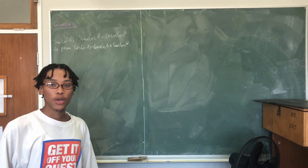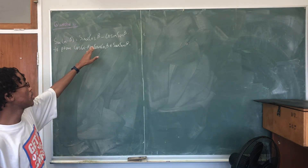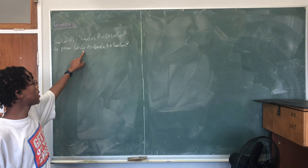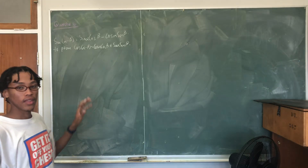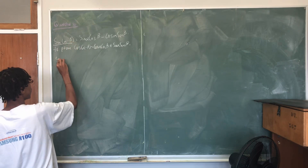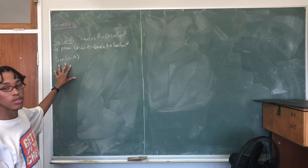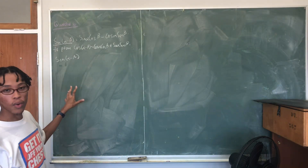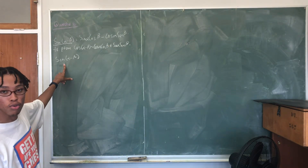For this question we have been told that sin(alpha minus beta) is equal to sin alpha cos beta minus cos alpha sin beta. We need to use that to prove that cos(alpha minus beta) equals cos alpha cos beta plus sin alpha sin beta. The first thing we are going to do is start with sin(alpha minus beta) and find a way to convert sin to cos towards the end.